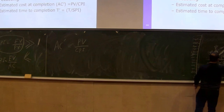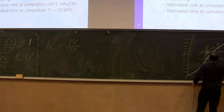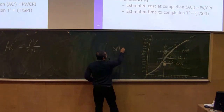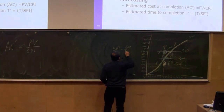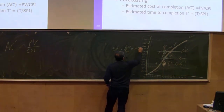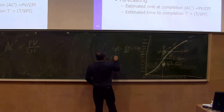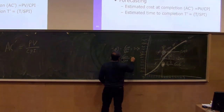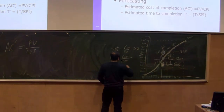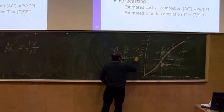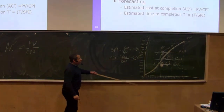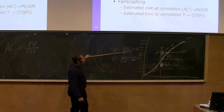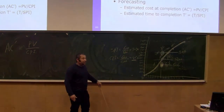And the actual cost was 1500. So the SPI is 600 divided by 1200, which is 50%. And the CPI is 600 divided by 1500, which gives 40%. So for this example, the Cost Performance Index is 40% and the Schedule Performance Index is 50%. From these, we can predict the future.